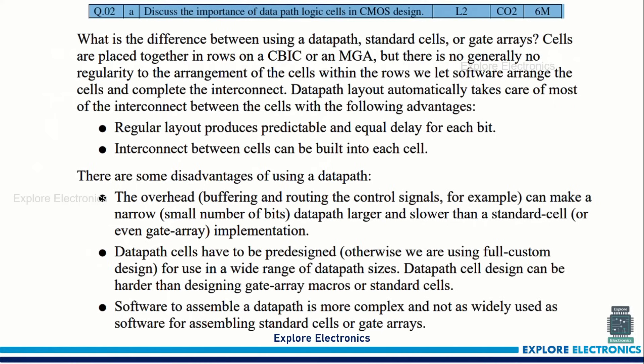The fourth question: discuss the importance of data path logic cells in CMOS design. Related to data path, examples like adders are given in the textbook — you can mention those. Also explain the advantages and how data path logic is very important in system CMOS design. Please refer to the textbook for more information; I have added some part of the answer here.